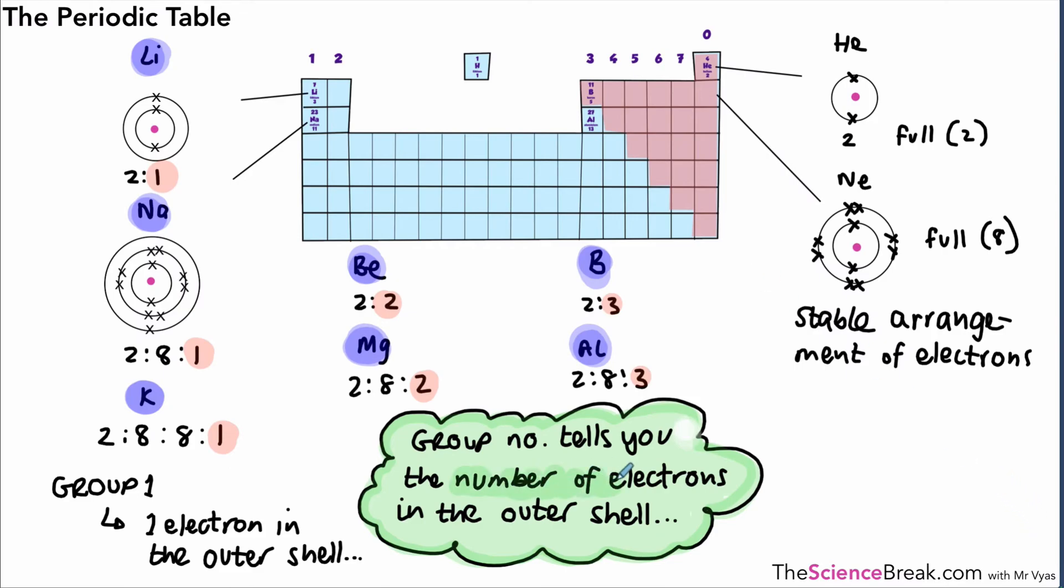That's an important point because the number of electrons in the outer shell doesn't only tell you the group number, but it also determines the kind of chemical reactions those elements take part in. It determines the chemical reactions based on the electrons in the outer shell. That determines the chemical properties. Because we have a stable arrangement of electrons in group 0, they are very unreactive. We're going to look at the details of each of those groups in the next upcoming videos.